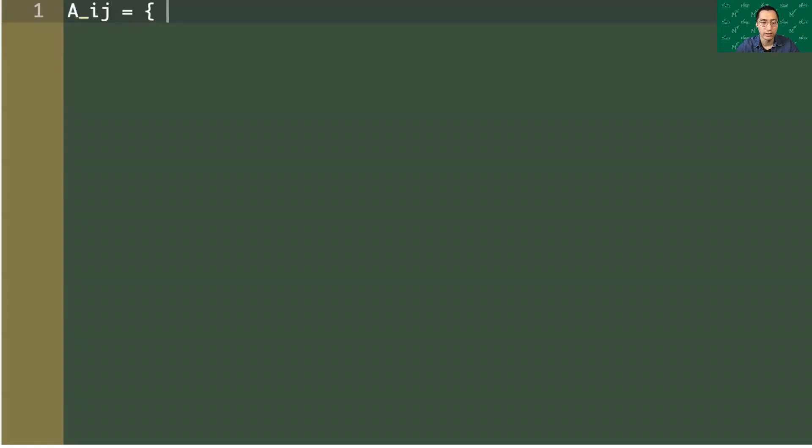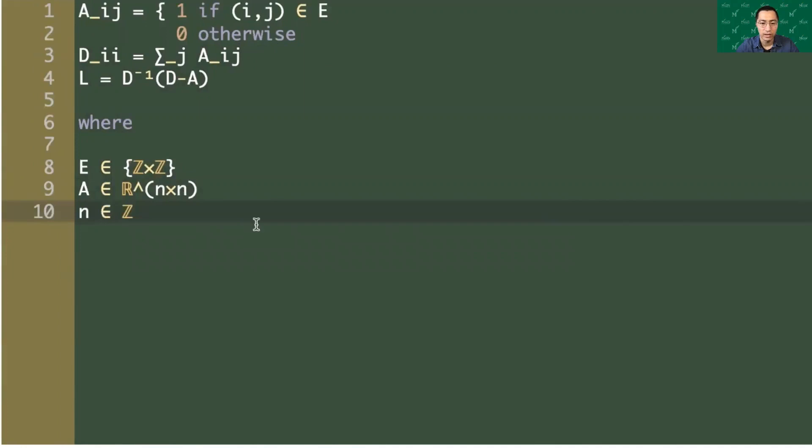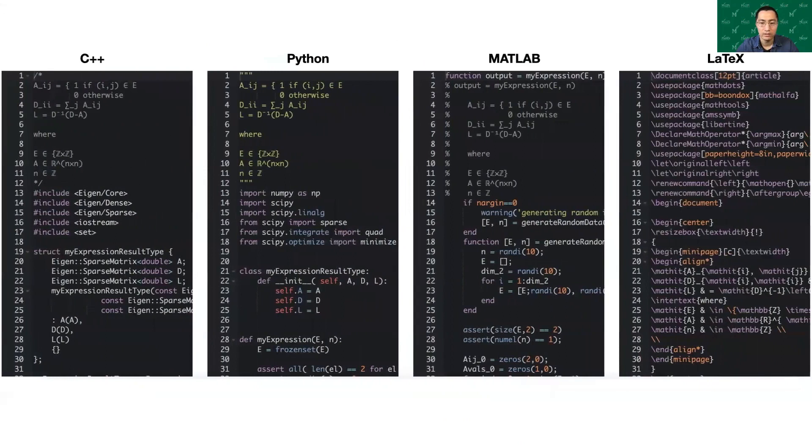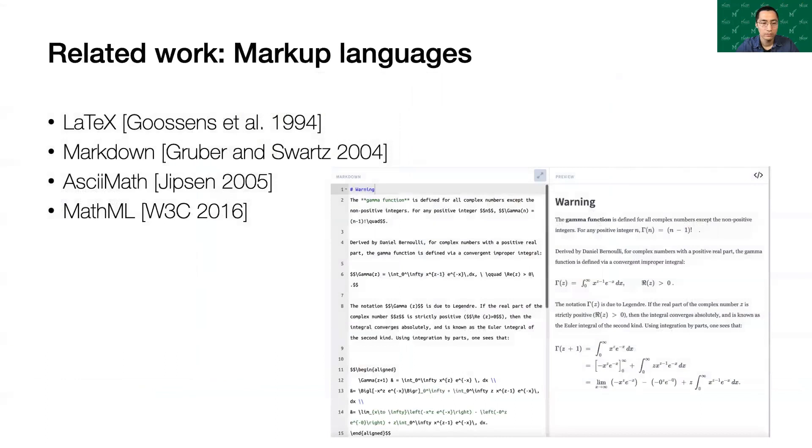We introduce I❤LA, a language with syntax designed to closely mimic conventionally written linear algebra, while still ensuring an unambiguous, compilable interpretation. I❤LA allows users to write linear algebra in text form and compile the same source into LaTeX, C++ with Eigen, Python with NumPy, SciPy, and MATLAB.